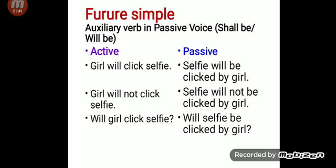Now let us convert it into its passive form. First, we have to convert the object into the subject. So selfie becomes the subject in passive form. Then we have to put the correct auxiliary verb — selfie will be. Will be is the correct auxiliary verb to use with selfie. So: Selfie will be clicked — clicked is the main verb in verb's third form — then by, then girl.